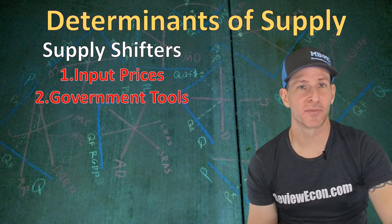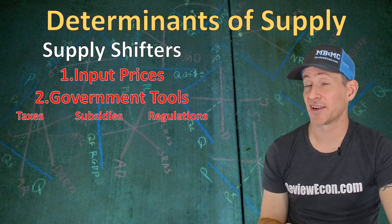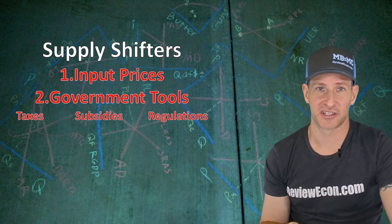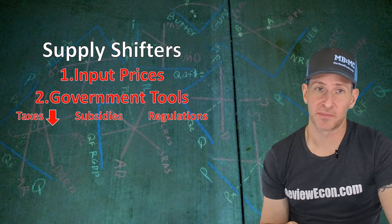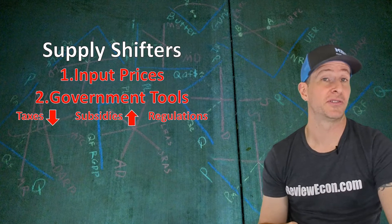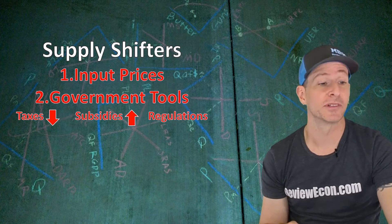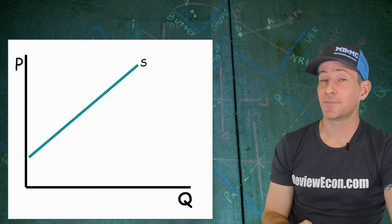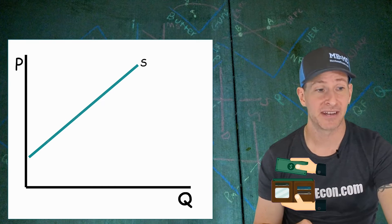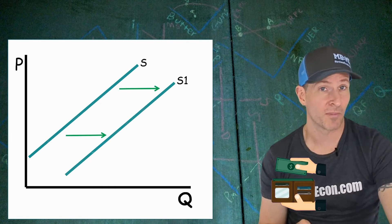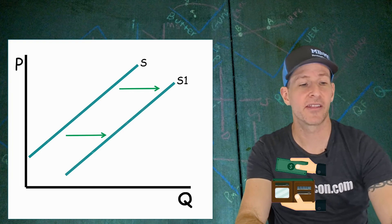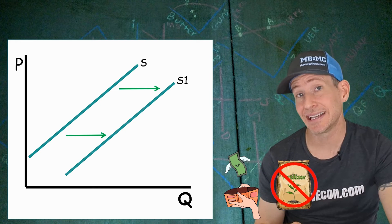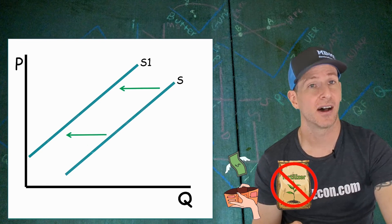The next supply curve shifter is government tools. There are three: taxes, where the government charges a business per unit produced; subsidies, where the government pays a business to produce; and regulations, which vary by business. Per unit taxes decrease supply, subsidies increase supply, and regulations generally decrease supply. For example, a per unit subsidy on wheat means farmers get paid per bushel produced, making wheat more profitable and increasing supply. On the other hand, a tax on wheat or a regulation banning a particular fertilizer increases production costs and shifts the supply curve leftward.